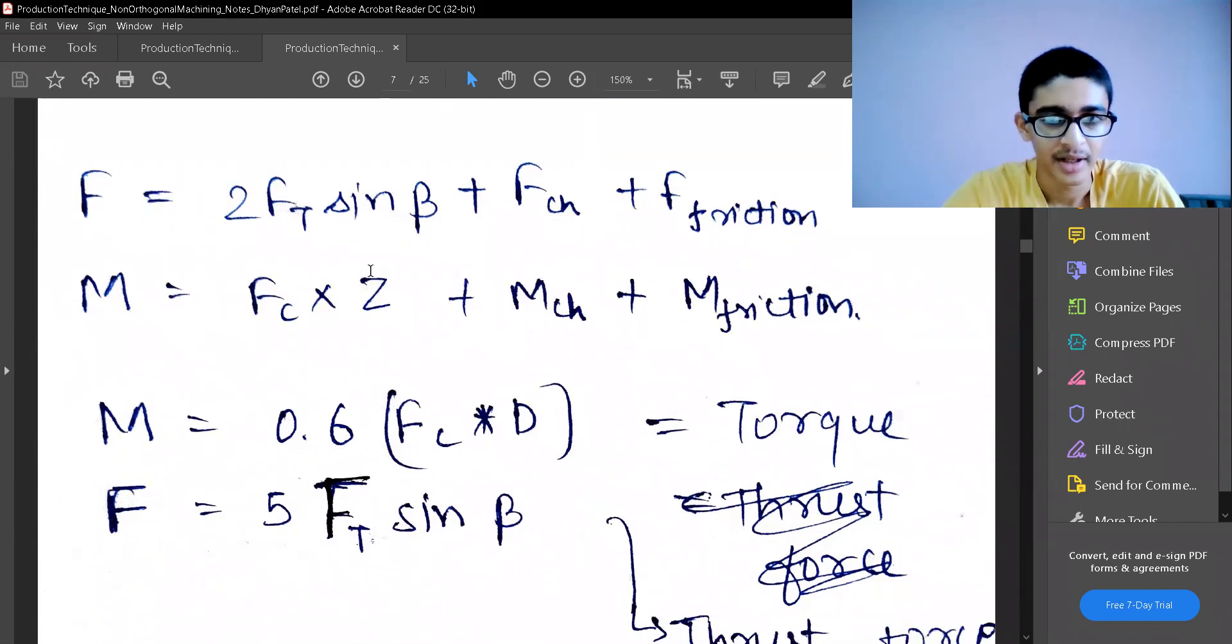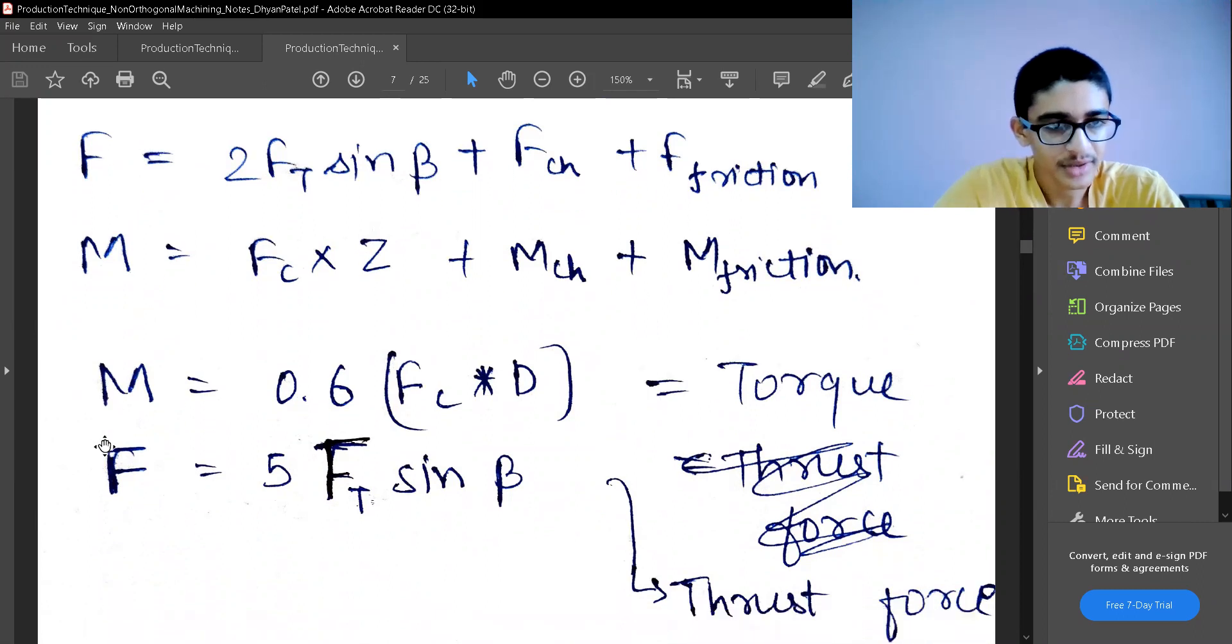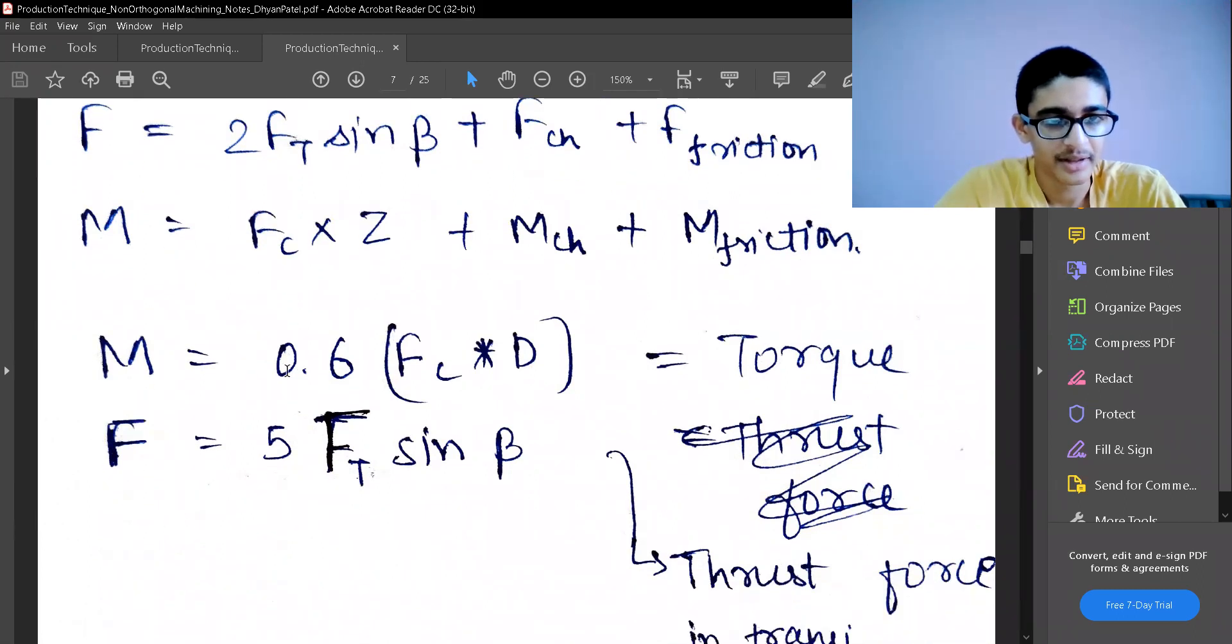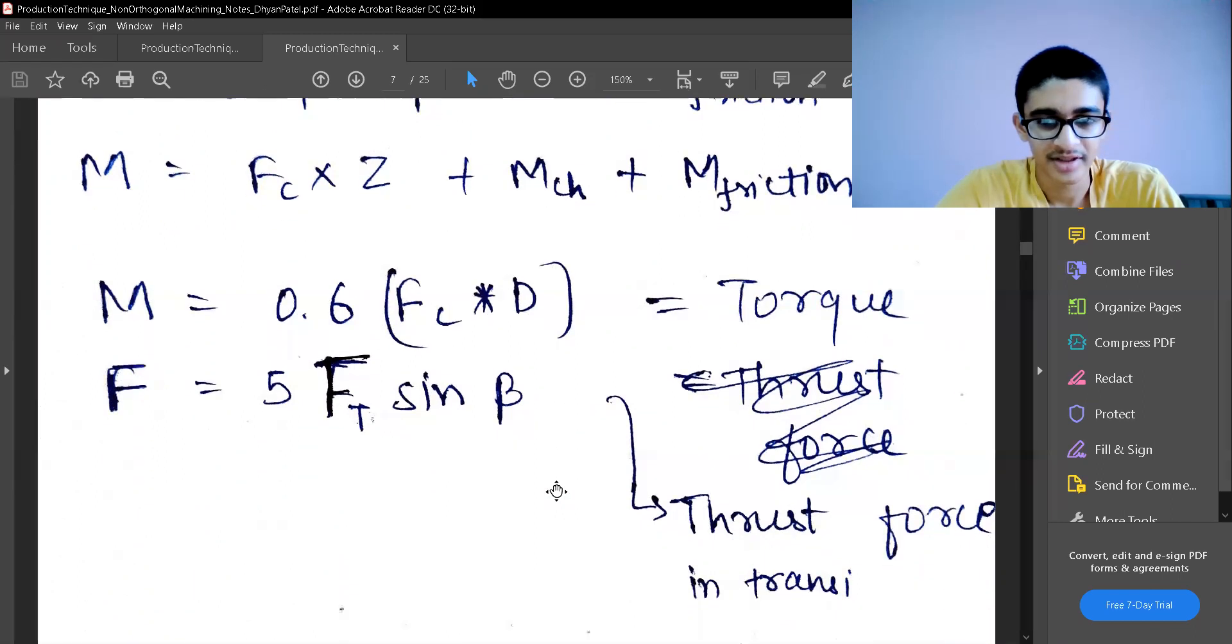But getting M ch, f ch are very tough and they can be continuously varying also sometimes. So we have made a simpler equation in terms of what we have known earlier, which is easier for us to understand. M is approximated as 0.6 into f c into d. F c is already known, the cutting force, this is the diameter, so we have got the torque.